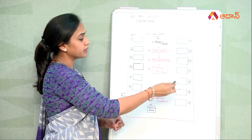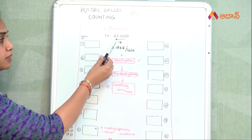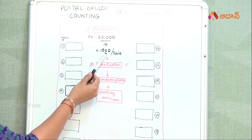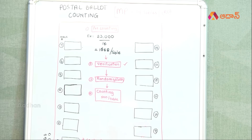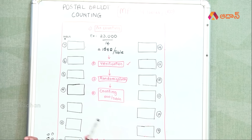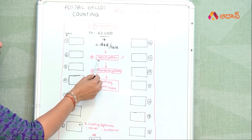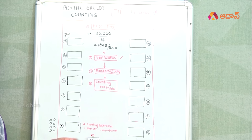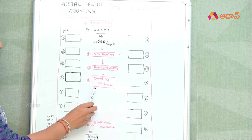We have 23 postal ballots. They are taken first to scan. Then we have 14 tables and the ballots are divided among them. The postal ballots are verified here. We have to verify the amount of ballots that can be provided. That is why you can use the valid postal ballots, and that is why you start counting.